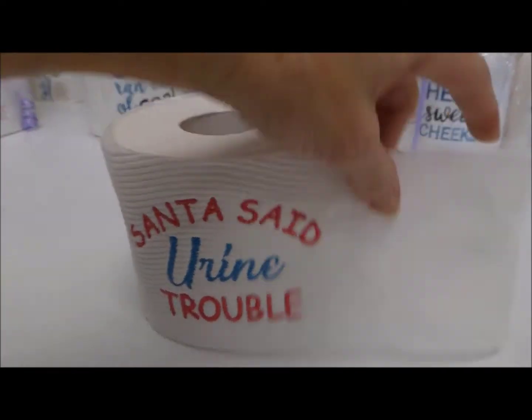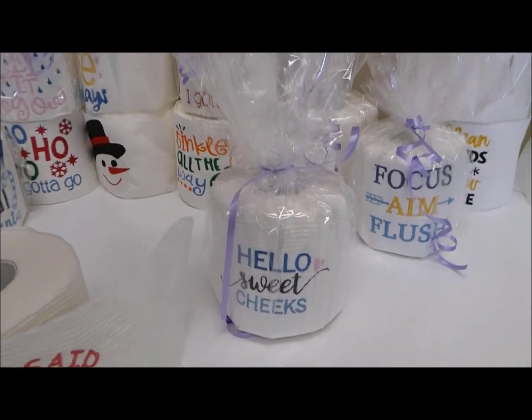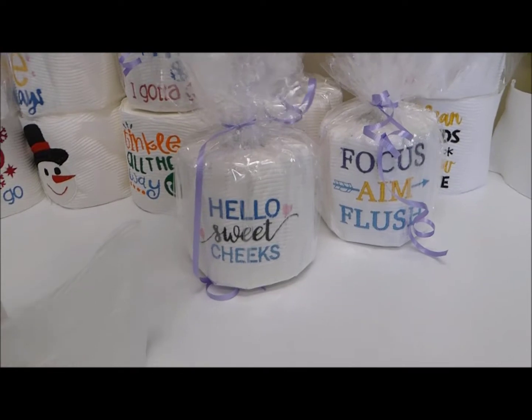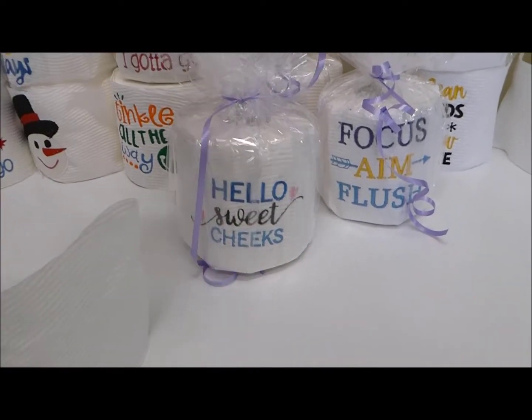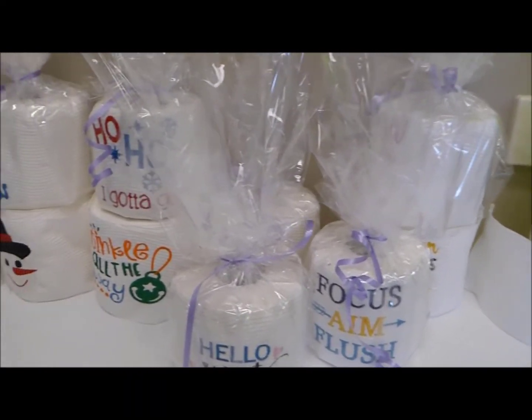Once we have our embroidered toilet roll, it's just a matter of then wrapping it in cellophane. This one was a simple flat cellophane on a roll. We've just tied that up, but you can get cellophane bags where your toilet roll just slips into. Wrap it with a nice bit of ribbon and there you have it.